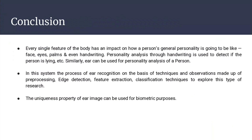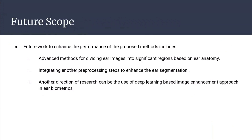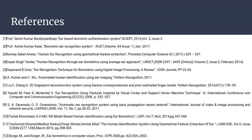Conclusion. Every single feature of the body has an impact on a person's personality. Similarly, the ear can be used for personality analysis. The process of ear recognition is based on pre-processing, edge detection, feature extraction, and classification techniques. The uniqueness of ear images can be used for biometric purposes. Future work includes advanced methods of dividing the ear image into significant regions based on ear anatomy, integrating additional pre-processing steps to enhance ear segmentation, and using deep learning-based image enhancement in ear biometrics. References used are listed. Thank you.